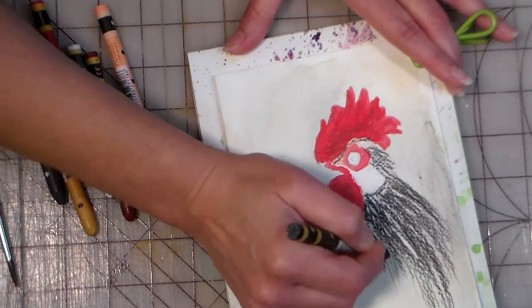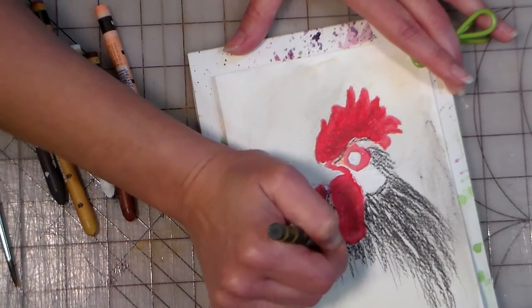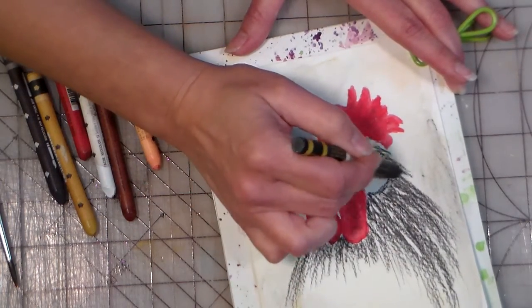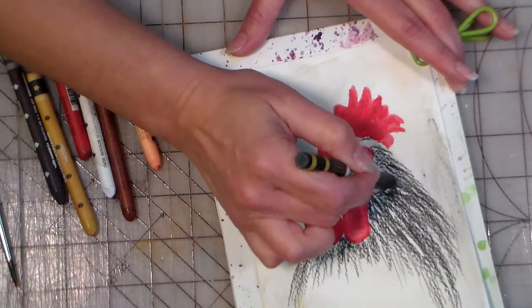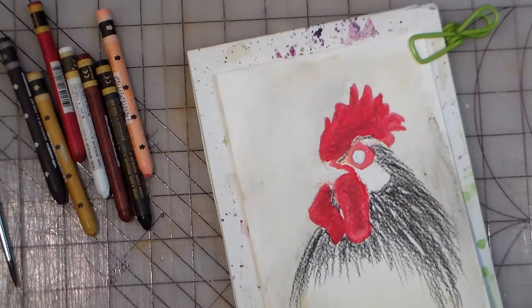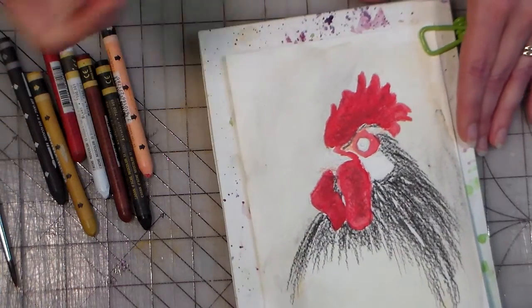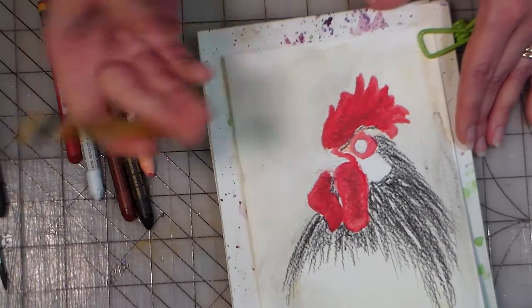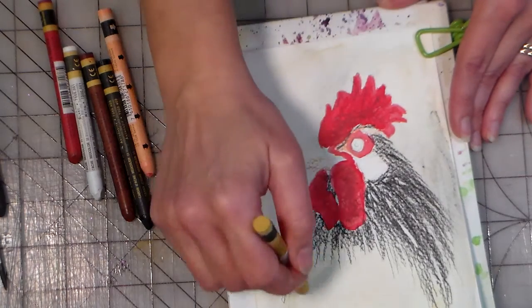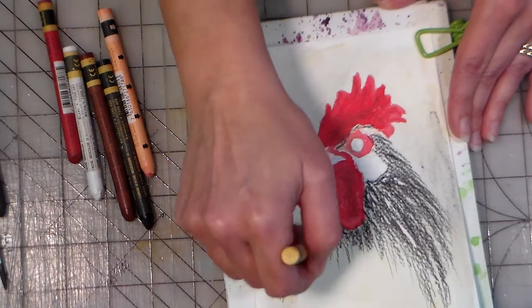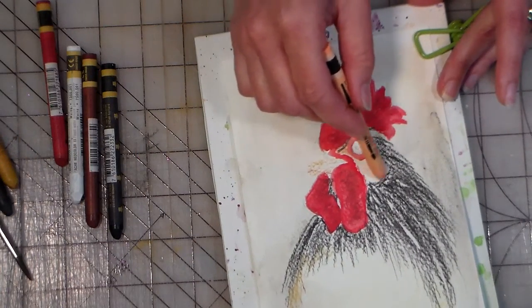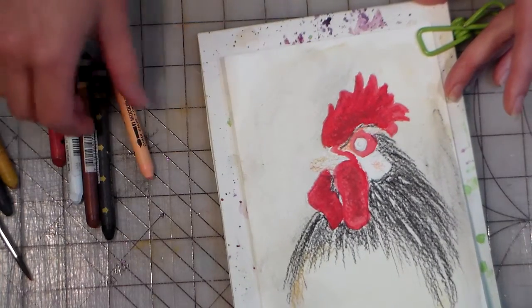I'm using Caran d'Ache brand crayons, I think they're the best. I have used other brands and they're just really creamy and soft and they work really well. If you had the choice between these and gelatos, I'd go with these. If you have the choice between these and any other brand of watercolor crayon, I would go with these. Just keep your brush strokes in that same fashion. You want to be flicking the brush the way in the direction of the feathers.